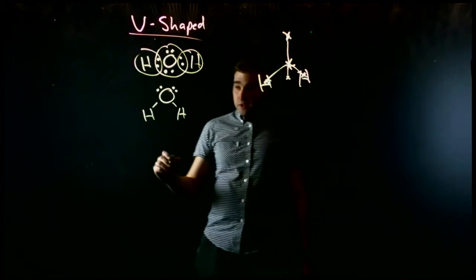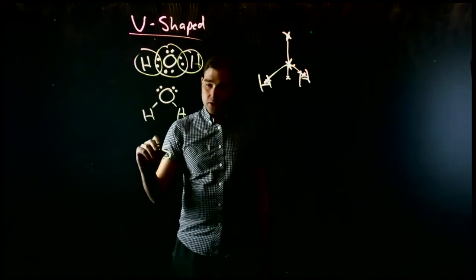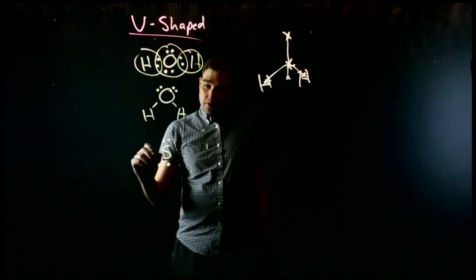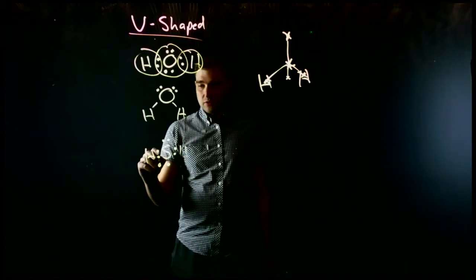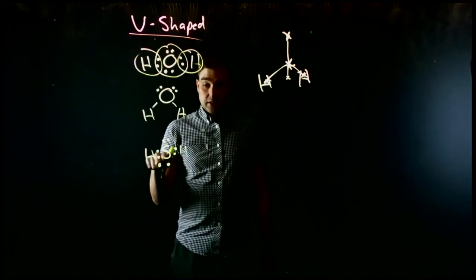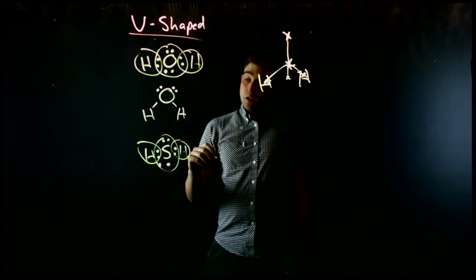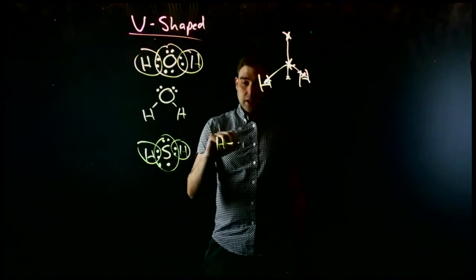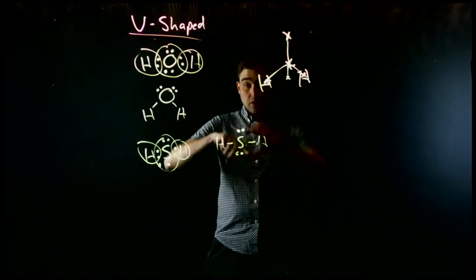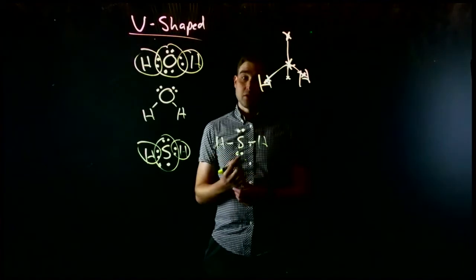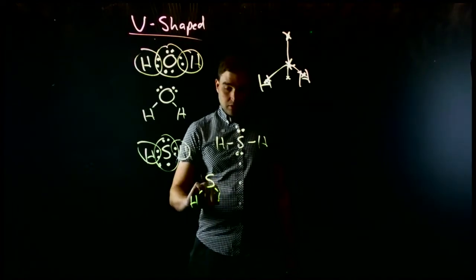Let's look at another example: hydrogen sulfide. Sulfur is similarly in group six, so it's got six electrons in its valence shell, giving a very similar structure. Each hydrogen has one electron, and drawing in our circles, again we're going to get something that looks like this, but with the non-bonding electron pairs. They're going to repel everything away to the corners of a tetrahedron, so our shape is going to be V-shaped as well.